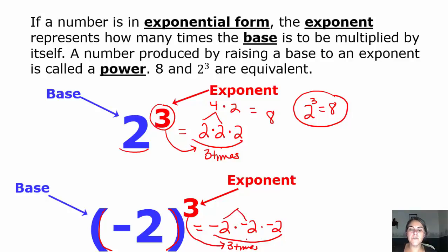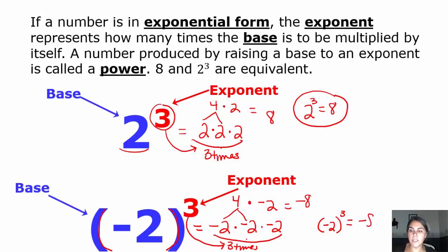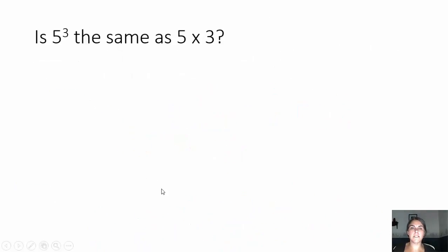Let's take a look. Negative 2 times negative 2 — a negative times a negative is a positive — 2 times 2 is 4. So then we have 4 times negative 2. A positive times a negative is a negative. 4 times 2 is 8. That means negative 2 in parentheses with the 3 on the outside is actually negative 8 when we simplify it. So negative 2 to the third power is negative 8.